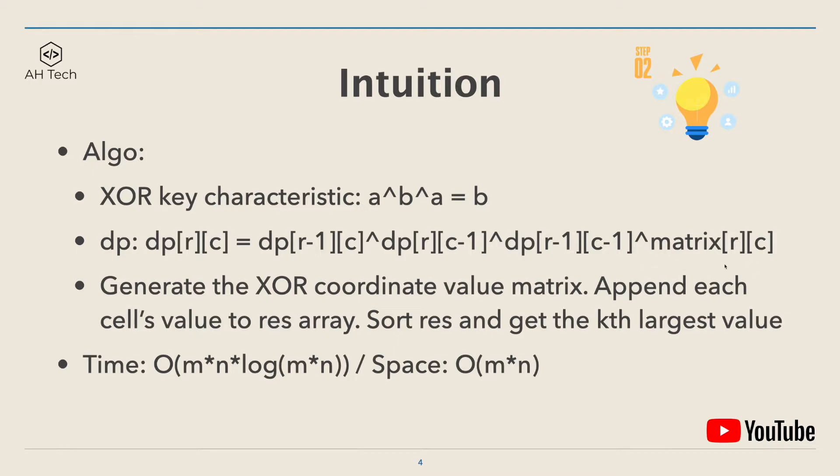We can generate the XOR coordinate value matrix, then append each cell's value to a res array. Finally, we sort the res array and get the kth largest value. The time complexity of this approach is O(m*n*log(m*n)) because we need to sort the res array at the end. Since the data size of the matrix will only go up to 1000, this approach will work just fine.